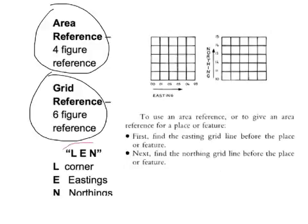This little acronym here, LEN, is the one I would suggest that students use. Firstly, you're reading from the left corner, you read the eastings then the northings. So the eastings are the numbers that would run along the bottom or run to the east and the northings are the numbers along the side that would run to the north. If you're able to remember that, then you're well on your way to being able to use area and grid reference.